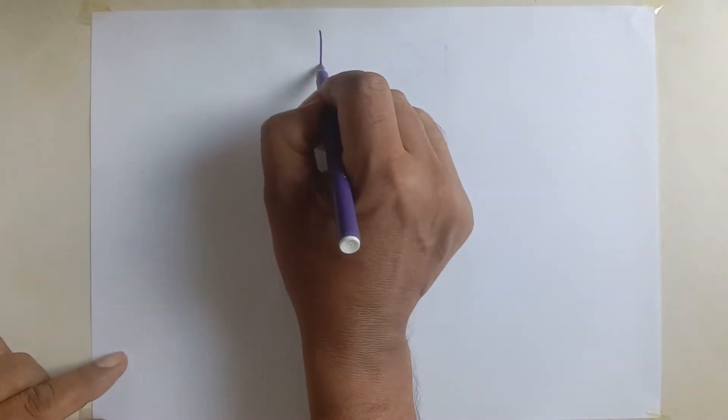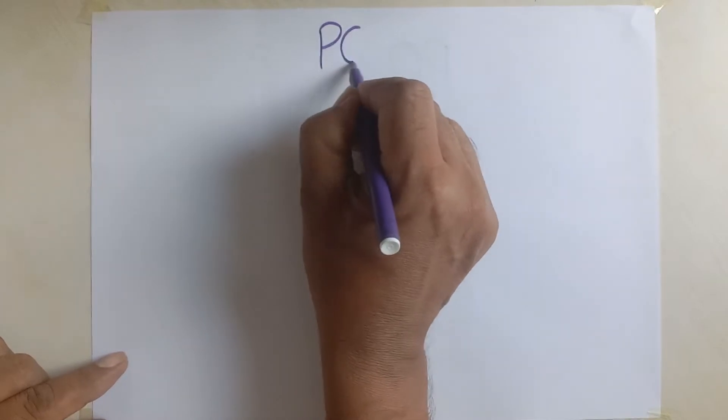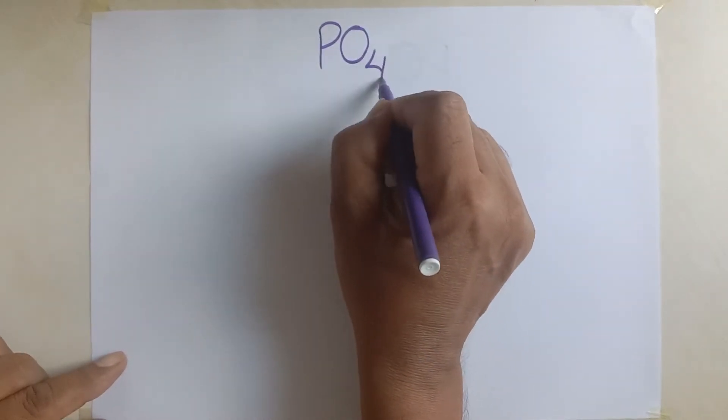Today I want to tell you about phosphate, a radical phosphate. Its formula is PO4.